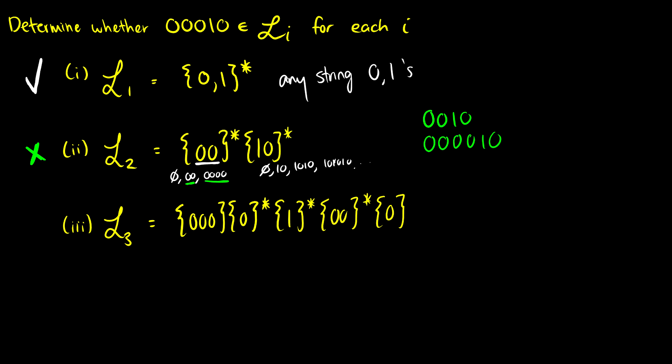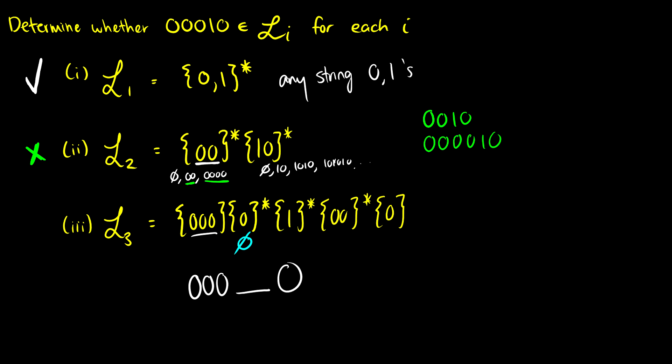The third language is really complicated. Essentially we have three zeros, then a zero star, a one star, a zero zero star, and then a zero. Remember all we want is three zeros, a one, and a zero. The first part says we have to have three zeros, then we can put some stuff in between, and then we have to end with a zero. Is there any way to get just a one out of the middle part? Yes — we take zero of the zeros, one of the ones, and zero of the 00s. Our resulting string is 00010, so for language three we are good.